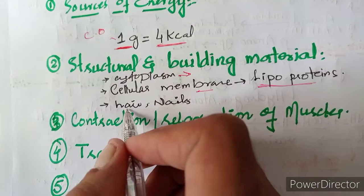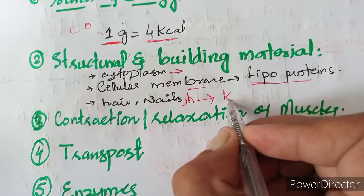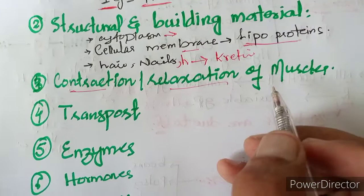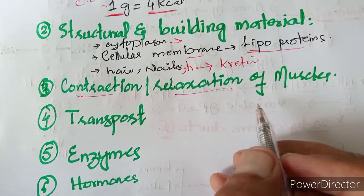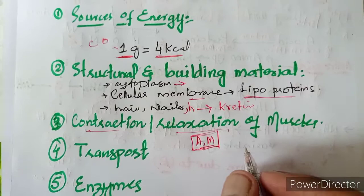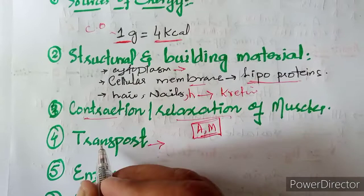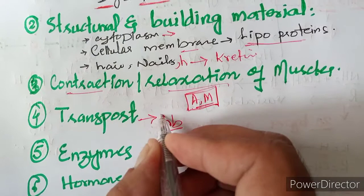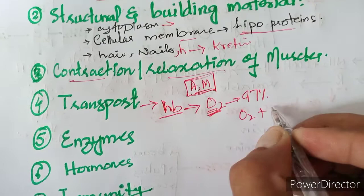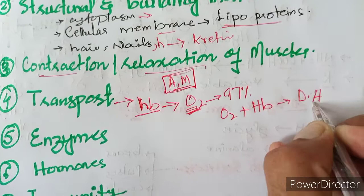Body structures such as hairs, nails, and hooves are made of proteins. Proteins also help in the contraction and relaxation of muscles — for example, actin and myosin proteins. Hemoglobin is a protein that transports oxygen in the body; about 97% of oxygen is carried by hemoglobin.